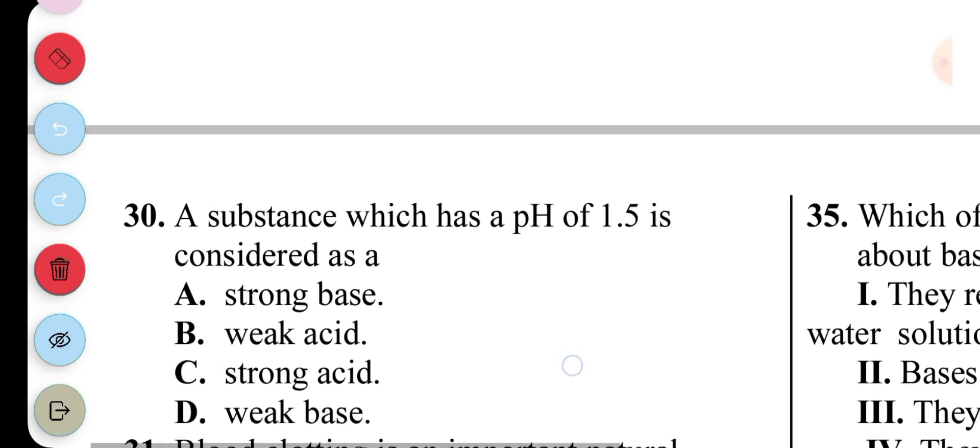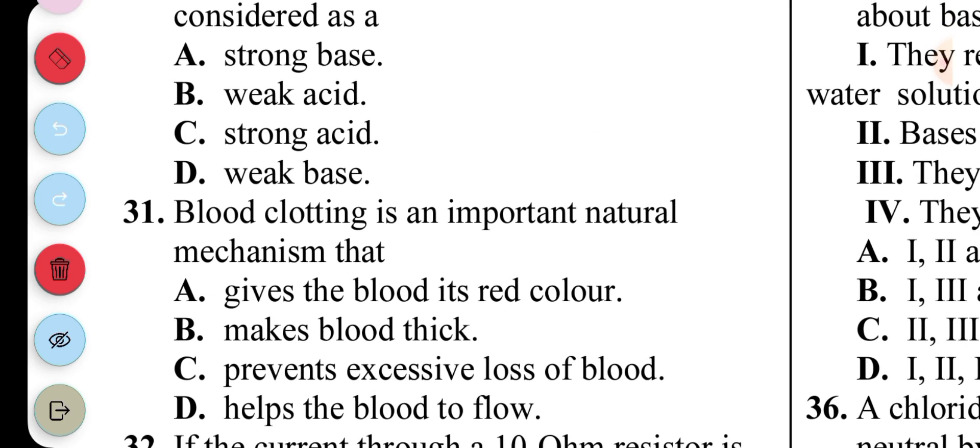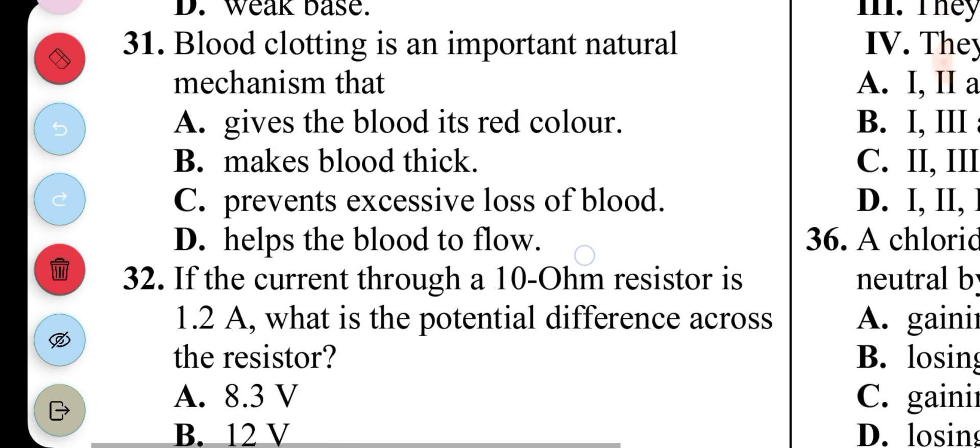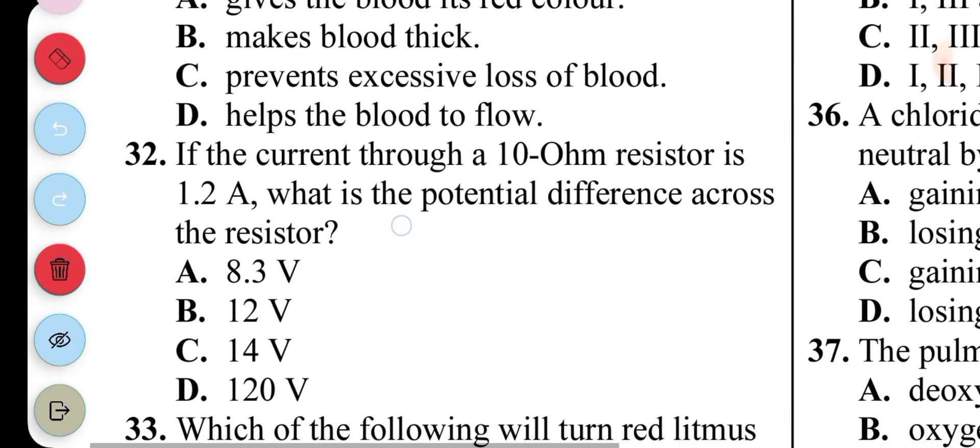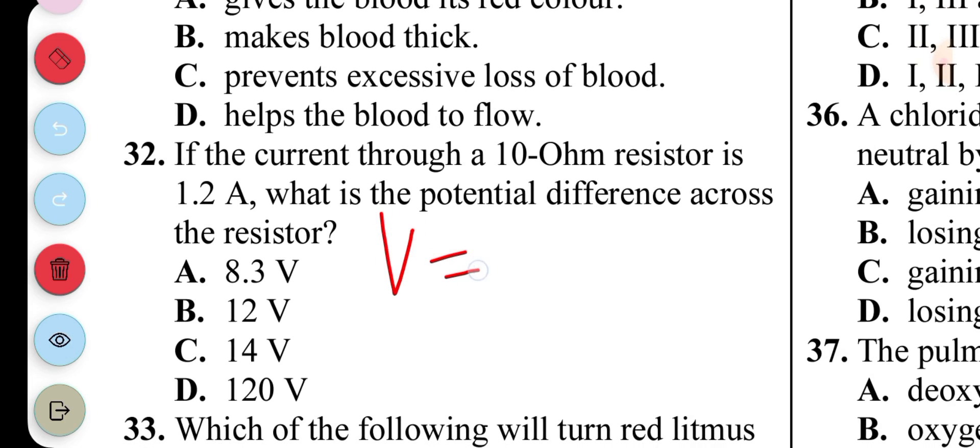Question 31: Blood clotting is an important natural mechanism that... Blood clotting prevents excessive loss of blood. So the answer is C. Question 32: If the current through a 10 ohm resistor is 1.2 amperes, what's the potential difference? V equals IR again. So I is the current which is 1.2 multiplied by resistance which is 10. 1.2 times 10 is 12. So our answer to question 32 is B.